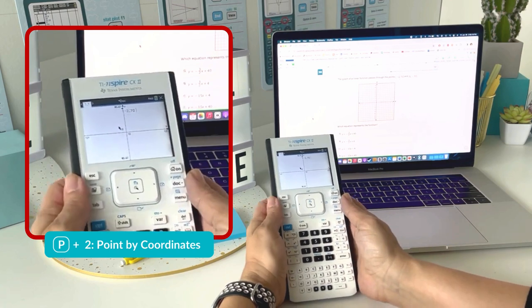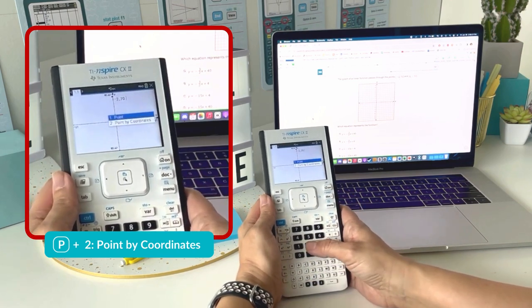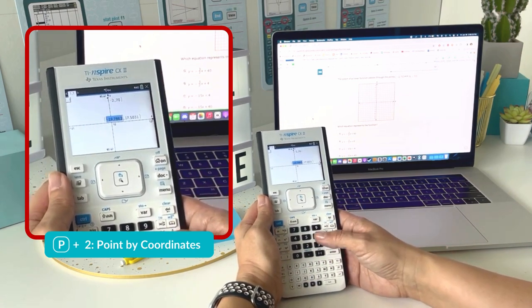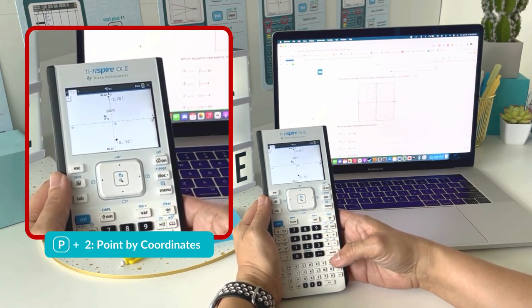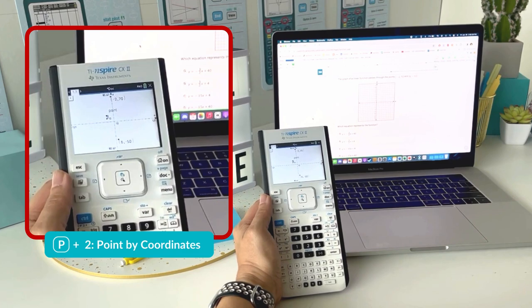I'm going to hit escape and choose letter P again to enter my second coordinate, which is six, hit enter, and negative 50. Now I have both my coordinates listed there.